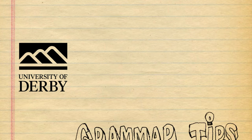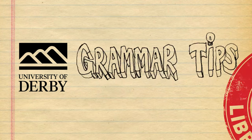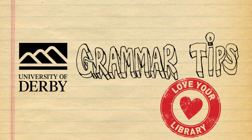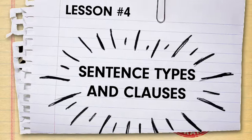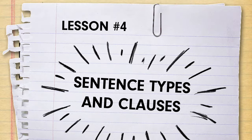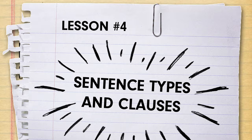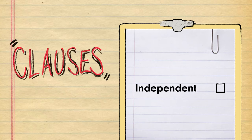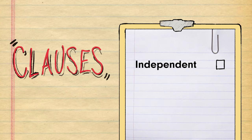Welcome back to another grammar video where we show you how to improve your essays. Today we're looking at sentence types and clauses. Every sentence is made up of a combination of clauses, and there are two types of clauses: independent and dependent.